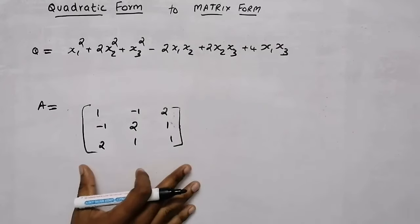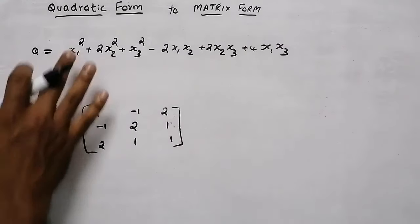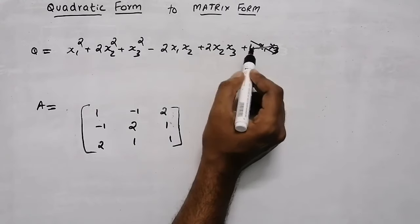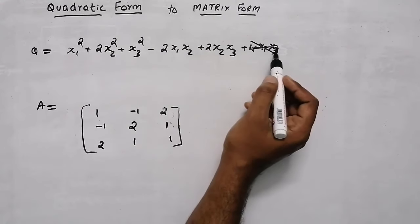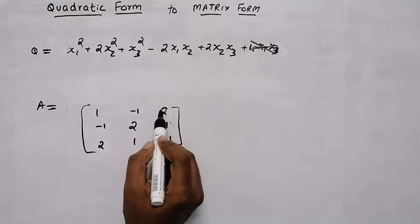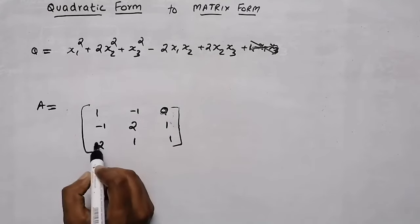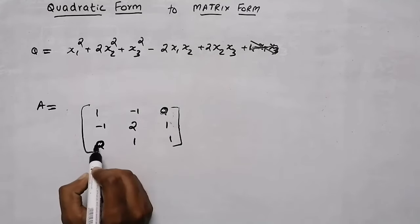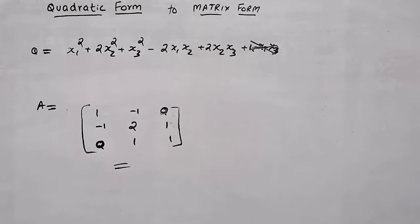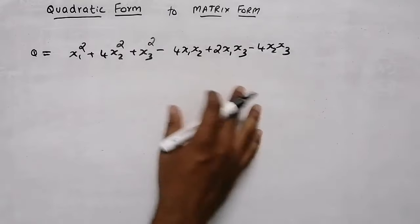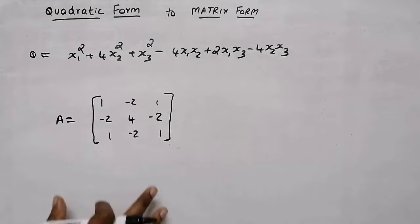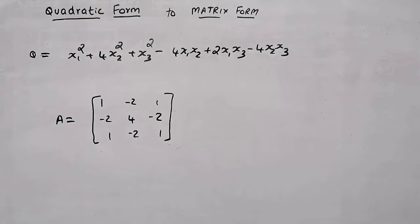So this will be our final matrix obtained from this quadratic form. Suppose there was no x1·x3 term — if the x1·x3 coefficient was not there, then we need to put 0 in that place, at the x1·x3 position. And this will be our matrix. Now it's your turn — do this question and check whether you are getting this matrix as the answer.